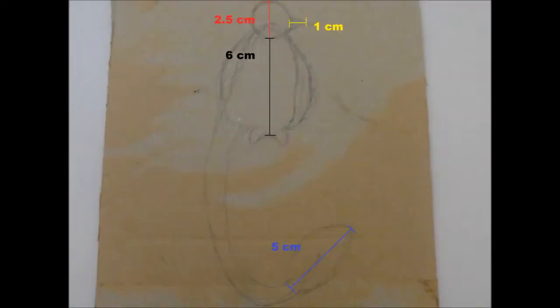First, draw a bird on the piece of cardboard. The bird which I have drawn has these dimensions. The beak is 1 cm. The diameter of the head is 2.5 cm. The length from the body to the leg is 6 cm. And the tail feather is 5 cm.